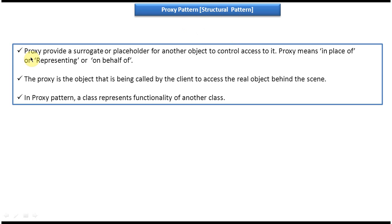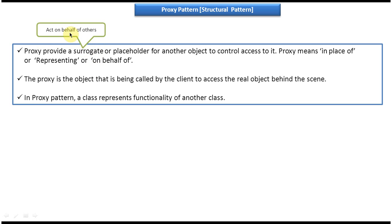The first explanation: proxy provides a surrogate or placeholder for another object to control access to it. Proxy means in place of, or representing, or on behalf of. The meaning of surrogate is to act on behalf of others. So the main work of proxy is it works on behalf of the real object, or it represents the real object. The second explanation is proxy is the object that is being called by the client to access the real object behind the scene. The third explanation is in proxy pattern a class represents the functionality of another class.